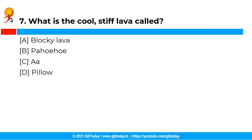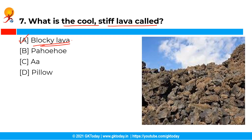The next question is: what is the cool stiff lava called? The correct answer is option A — blocky lava. All four mentioned options are the four types of lava. Blocky lava is the cool and stiff lava, and blocky lava does not travel far.